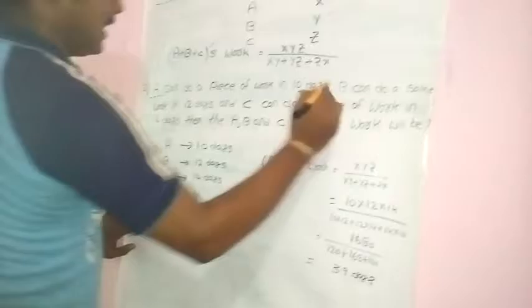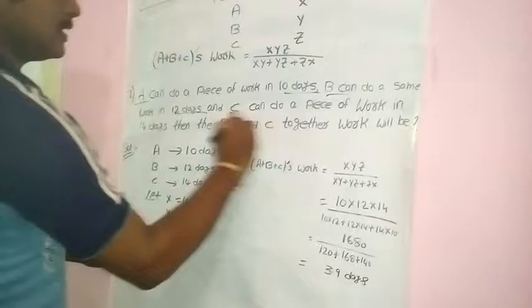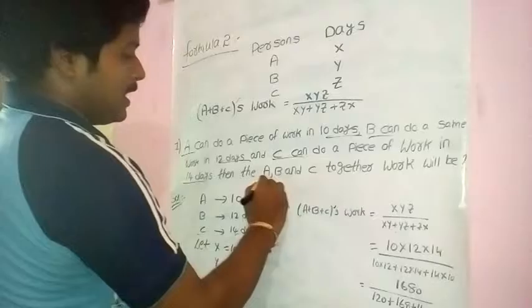Here you can observe: A can do the work in 10 days, B can do the work in 12 days, and C can do the work in 14 days. Let the number of days be X equals 10, Y equals 12, and Z equals 14.